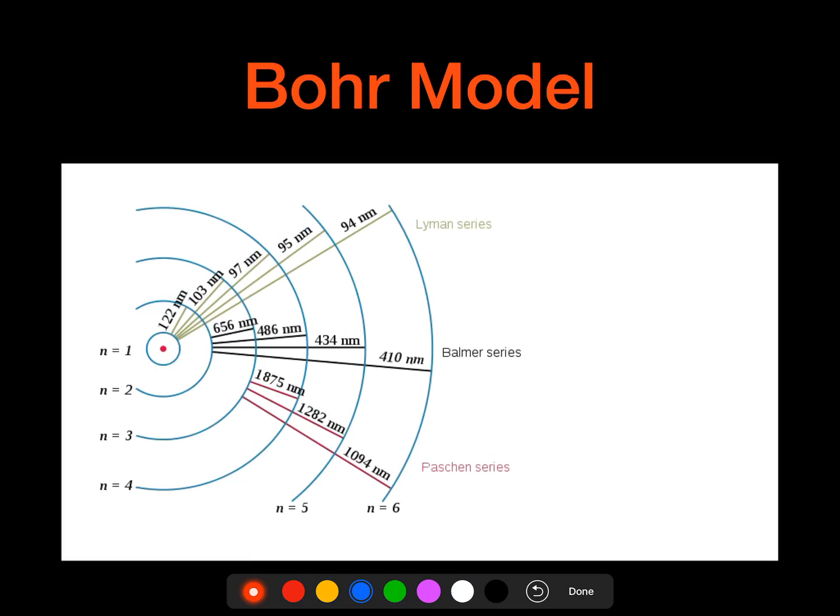So we have a lot of different models of the atom. And probably the more recent one outside of the quantum model that we still see frequently used is the Bohr model. And so in the Bohr model, the one thing that's really nice about it is that it actually puts all of our electrons into these energy levels. It's wrong because electrons do not orbit or take a clear path around the nucleus.